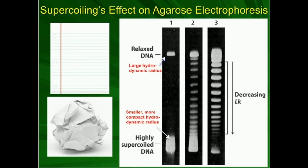So what we're going to assume here in this first column — the well is up here on the top — it seems that this band right here, which is relaxed DNA, did not migrate very far, but this other one down here that's highly supercoiled migrated much, much further. So why is it that relaxed DNA doesn't go very far, but highly supercoiled DNA goes much further?